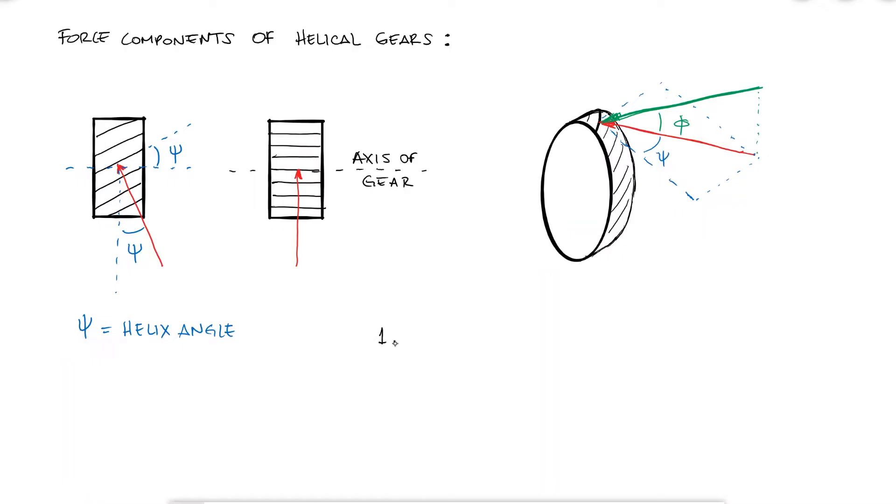Tangential W^t, which is the one that we can calculate from the power and speed information, radial W^r, and in this case, as opposed to the spur gears, axial W^a, in the direction of the axis of the gear. We also call this force component the thrust.